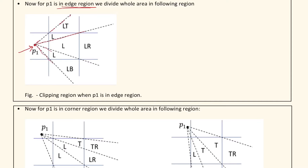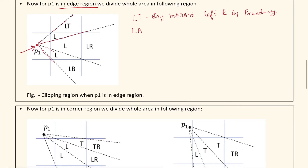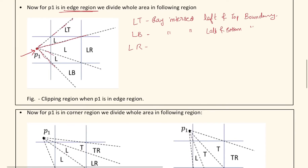LT stands for ray intersecting the left and top boundary. LB stands for ray intersecting the left and bottom boundary. LR stands for ray intersecting the left and right boundary. This is how we divide the whole area into following edge regions.